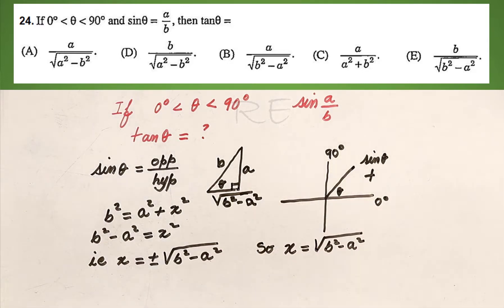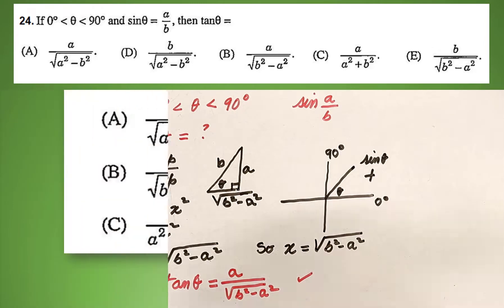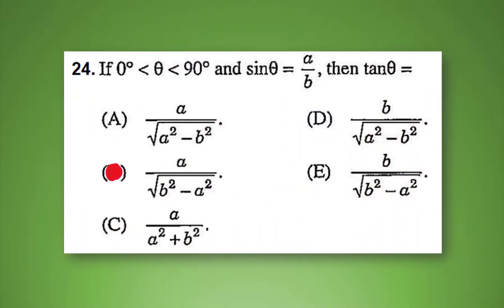And in order to look for the tangent, tangent theta will be the opposite A over the adjacent side, which is square root of B squared minus A squared. The correct answer is B.